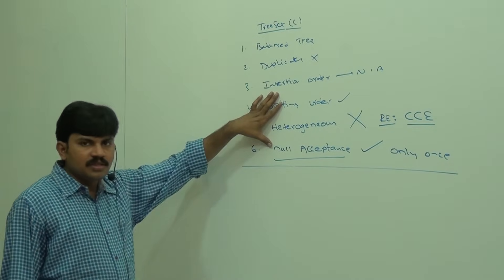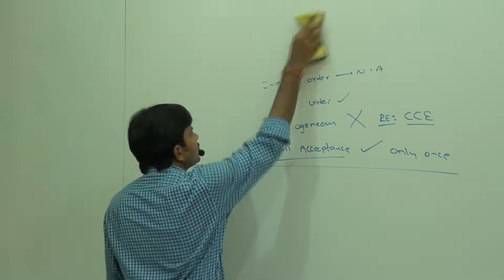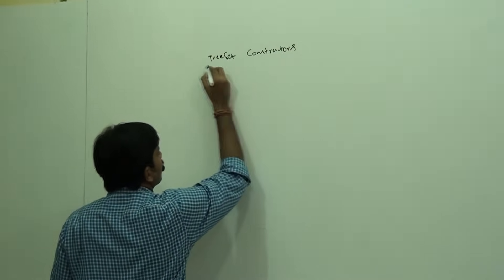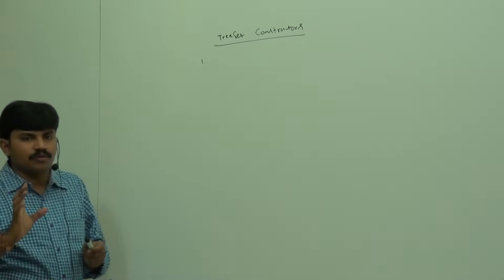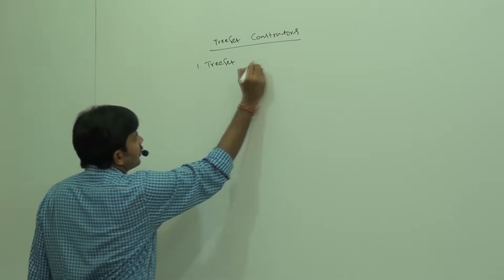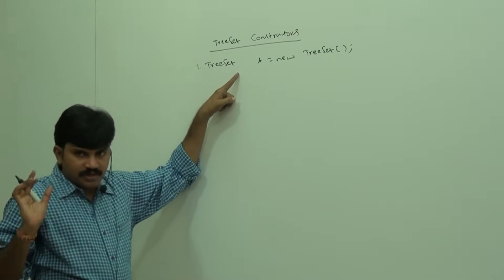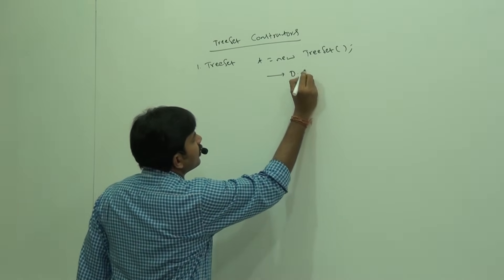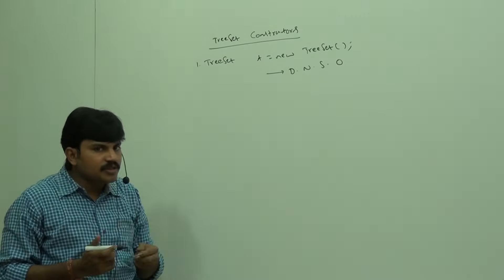These are the various properties of TreeSet. Now, what constructors are there for TreeSet? There are four constructors in total. The first two are most commonly used. The first one: TreeSet t = new TreeSet() — creates an empty TreeSet object where elements will be inserted according to default natural sorting order.